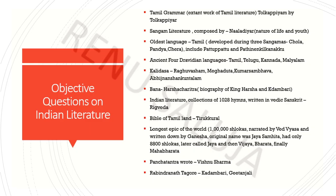Tamil grammar is a very important question. The earliest work of Tamil literature was written by Tolkappiyam. Sangam literature is the oldest Tamil literature work, associated with Three Kingdoms — Chola, Pandya and Chera. Sangam literature is known in South India. It has been divided in two parts: Pattu Pattu and Padinen Kilkkanakku. Other books written include Nalaiyar Divya Prabandham, about the Nature of Life and Youth, composed in Sangam literature. Tamil grammar was also composed in Sangam literature.